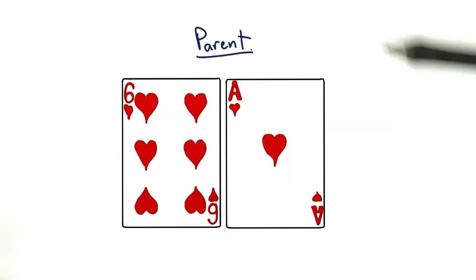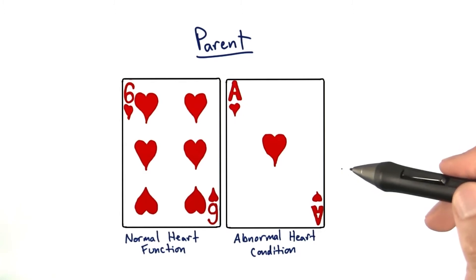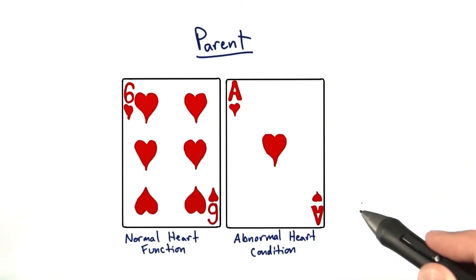Let's use our deck of playing cards as an example. Let's imagine that each parent has two playing cards each. A six of hearts, which correlates with the normal functioning heart, and an ace, which can cause the abnormal heart condition.